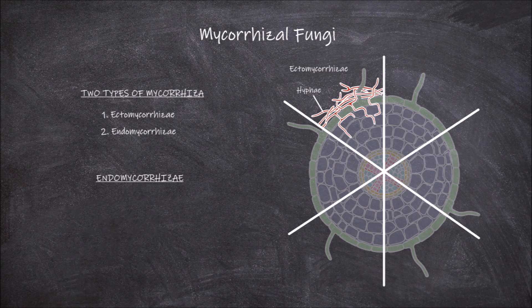Endomycorrhizae, on the other hand, are associations where the hyphae of the fungus penetrates the cells of the root. There are several types of endomycorrhizae.